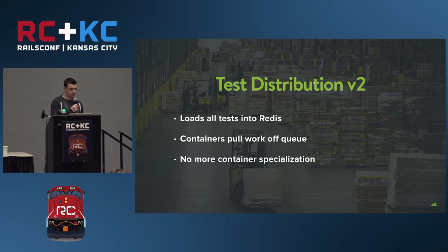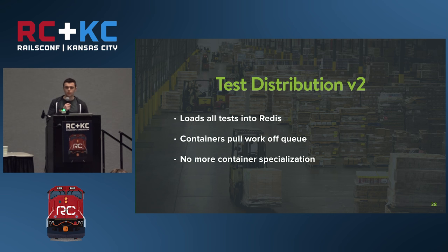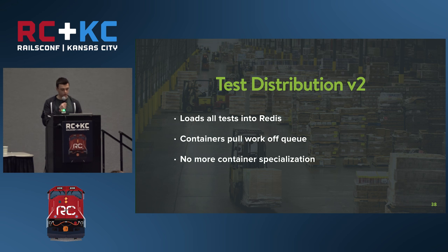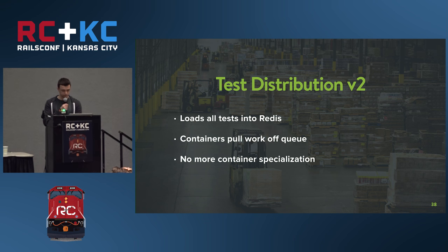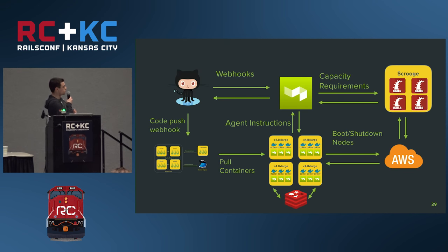For our second stab at test distribution, the first container to boot loads all its tests into Redis. The remaining containers pull from that Redis queue one by one. We also eliminated test specialization — all containers run all tests — which equalized container running times so they finish within tens of seconds of each other. This is what the second iteration of our CI system looked like.